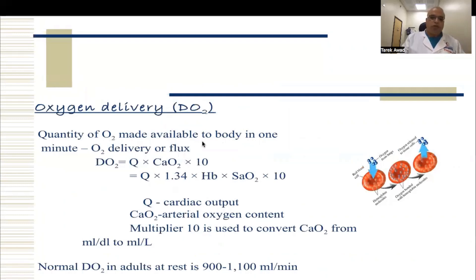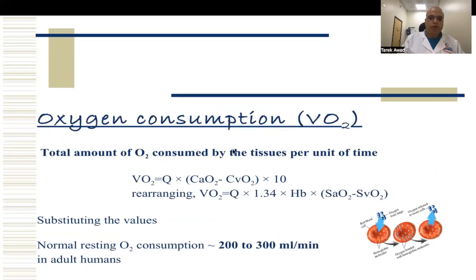The oxygen delivery — how oxygen is delivered to our body — depends on the oxygen content and the cardiac output. So cardiac output is very important in delivering oxygen, and the combined system delivers up to one liter per minute to the tissue. But how much does the tissue actually need? During rest, our body tissue consumes only 200 to 300 mL per minute. So we have around five times more oxygen available than needed at rest, which is more than enough.